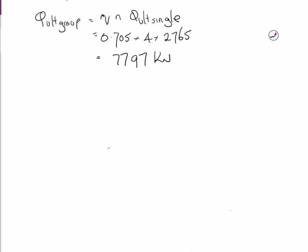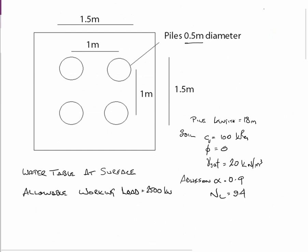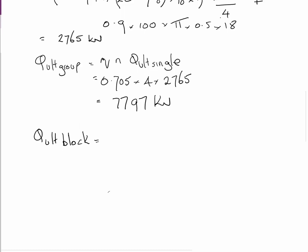Now we've got to look at Q ultimate block. And that is thinking that this group of four piles is working as a block that is 1.5 metres by 1.5 metres on each side. It's one solid block of material supporting the load. So if we go back down, Q ultimate block, the formula looks similar: it's C*NC plus Q*NQ times the area of the base of the block plus the sum of alpha times CU times area of the block sides.